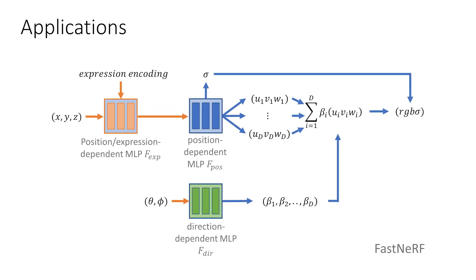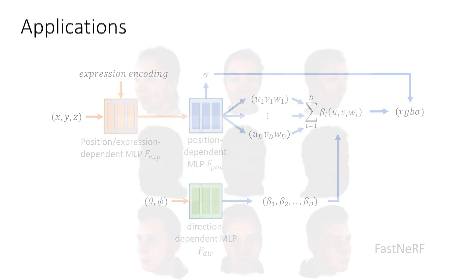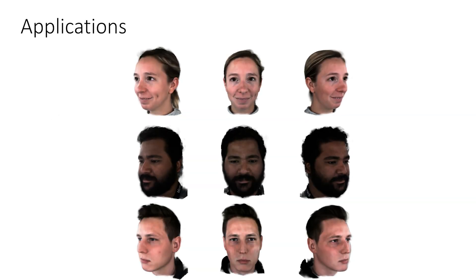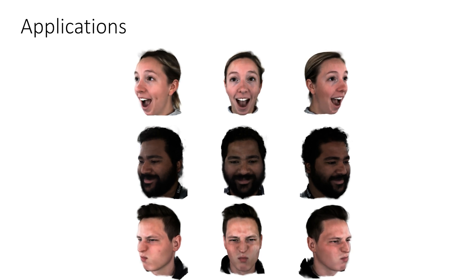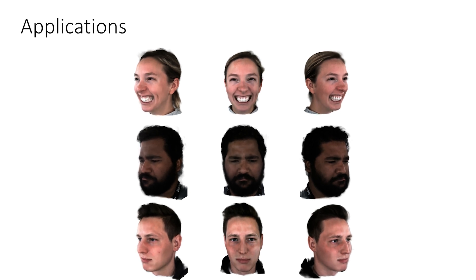Our method can be applied to a variety of scenarios enabled by extensions to NeRF. Here we show an example application to telepresence, where we train FastNeRF on a sequence of a person performing facial expressions. To allow for expression reconstruction, we add a deformation network that is conditioned on the expression coefficients of a phase model fitted to the training sequence. This additional network transforms the input sample positions to a canonical space. As FastNeRF takes only a few milliseconds to render these images, the deformation network becomes the main bottleneck, letting us achieve 30 frames per second in practice.